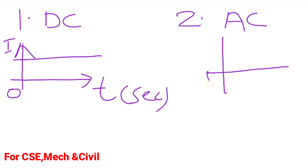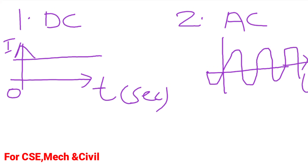The other type is Alternating Current, which is alternating in nature. If the current varies alternately with respect to time — considering time period on the x-axis and voltage or current on the y-axis — then it is AC, or alternating current.